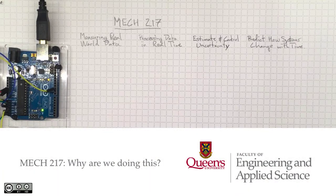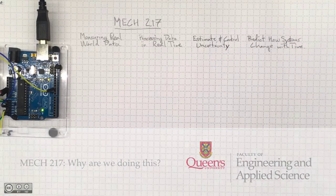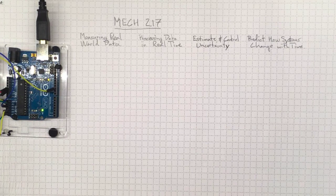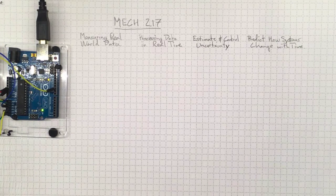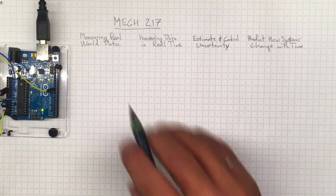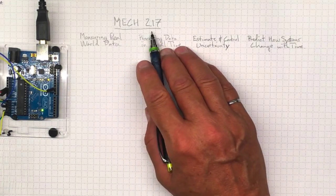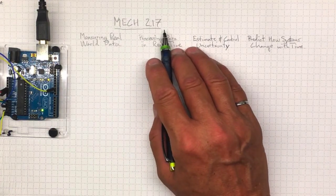By now you're probably starting to feel a little confused, as if we're trying to go in about four or five directions at the same time in MEC 217. And that really is because we are trying to go in four or five directions at the same time in MEC 217.